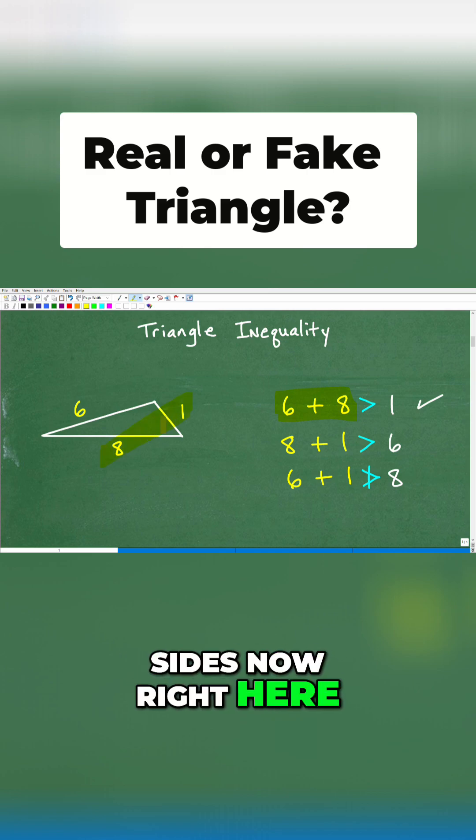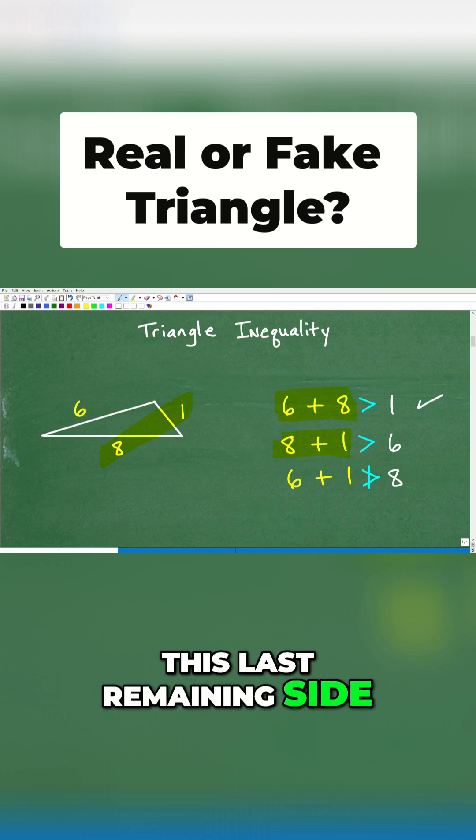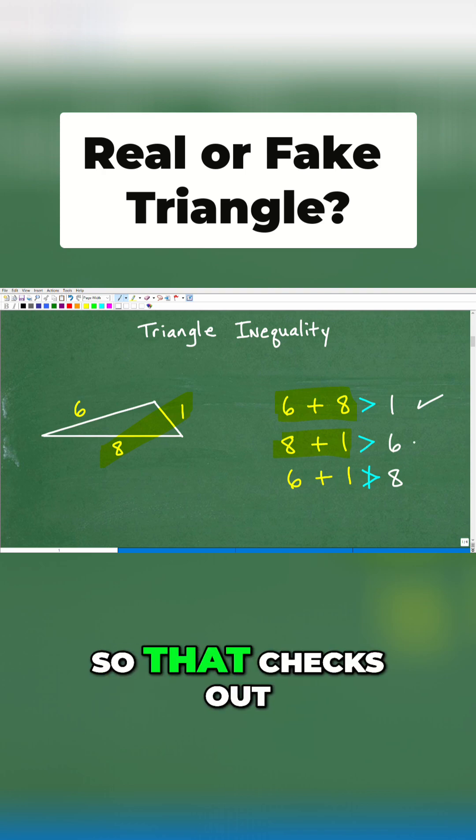So let's test these sides now right here, eight and one. If we add up these two sides, is this greater than this last remaining side? Well, of course, eight plus one is nine. Nine is in fact greater than six. So that checks out.